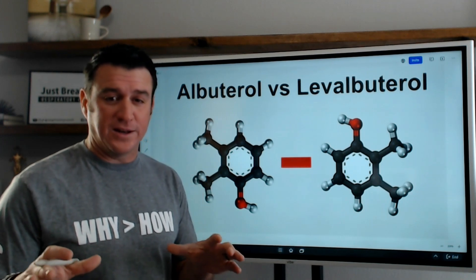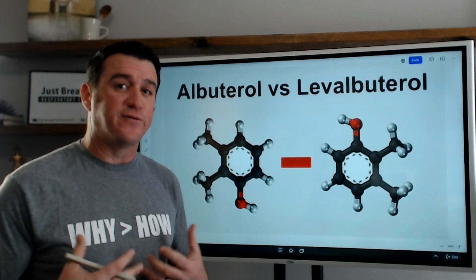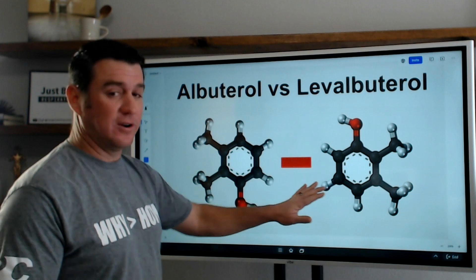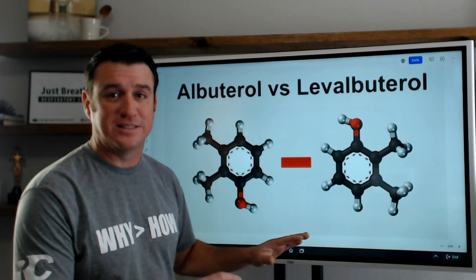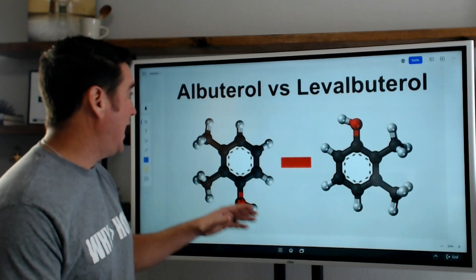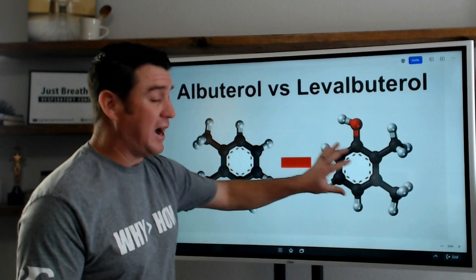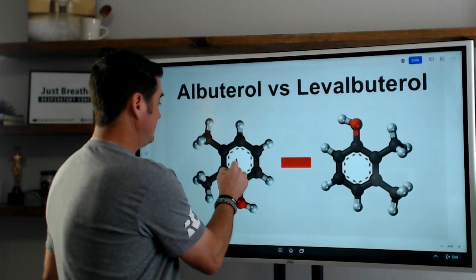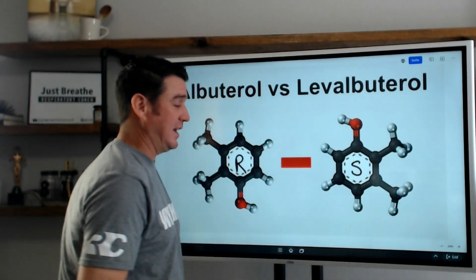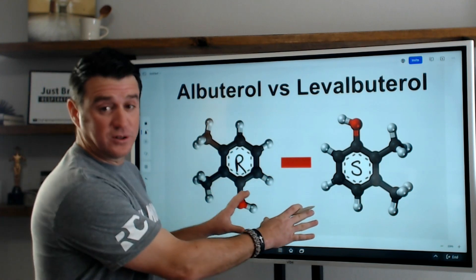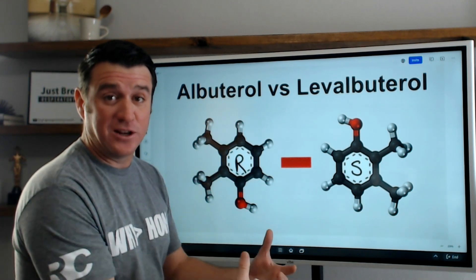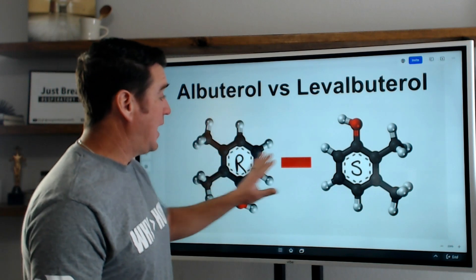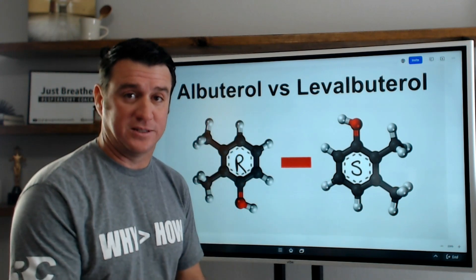Here's what we have to understand before we can understand the difference between them: the molecular structure of albuterol. What you're looking at here is a representation of that. This isn't the exact molecular structure — it's just showing you that albuterol is made up of two isomers: an R-isomer and an S-isomer. These two isomers together create the molecular formula for albuterol, and they create different responses physiologically.